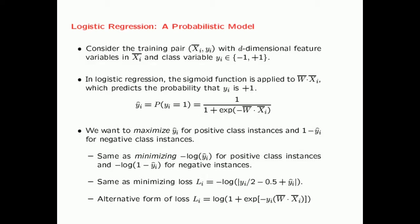In the case of logistic regression, we have a probabilistic form of the prediction of the class variable. We take the dot product of the weight vector W and the training instance X_i, and then apply the sigmoid function to obtain a value between 0 and 1. This value is assumed to be the probability that the class variable is plus one.